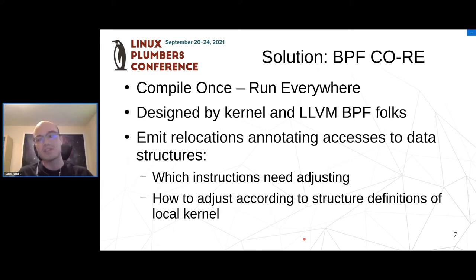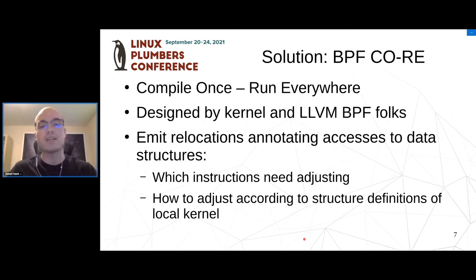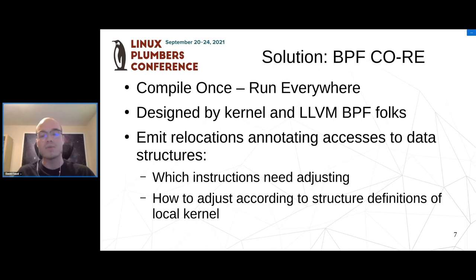Traditionally, the solution was to carry around a compiler between kernels and recompile your BPF program from C on every particular kernel version you want to run on. Luckily, there is a solution already implemented by the kernel and LLVM hackers in the LLVM BPF backend: BPF CO-RE — compile once run everywhere. This is basically relocations for accesses to kernel data structures, and now that BTF type information is available, we can finally implement it in GCC.